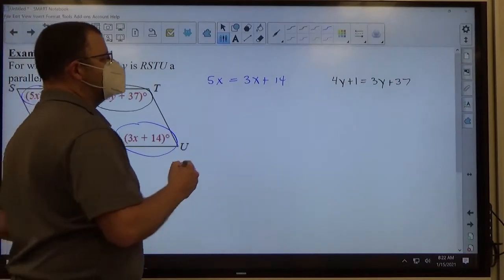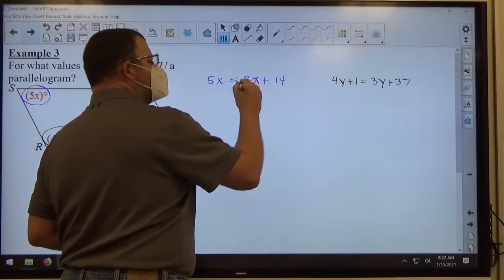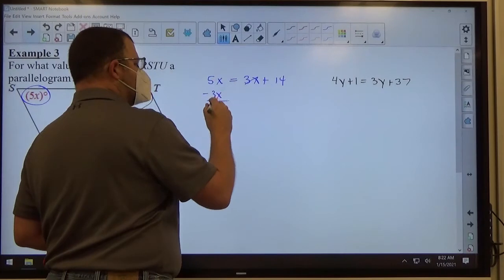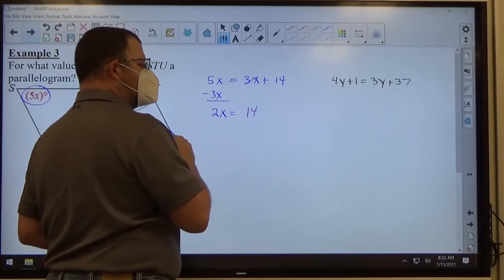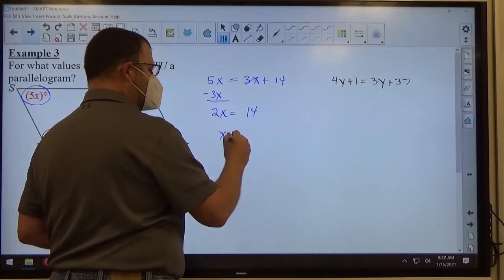So I move the 3x over here, it becomes minus 3x, 5x minus 3x is 2x, 14 is left on the right side, divide both sides by 2, we get x equals 7.